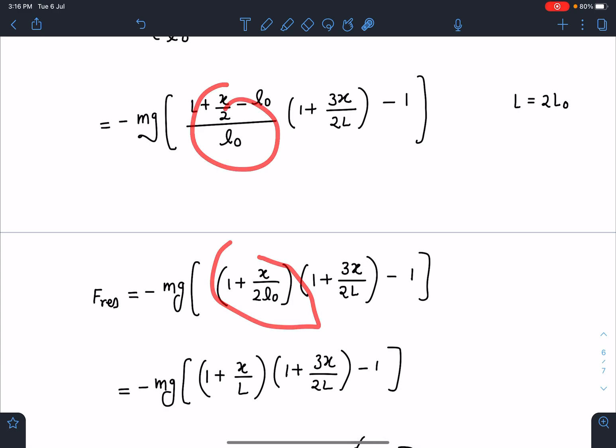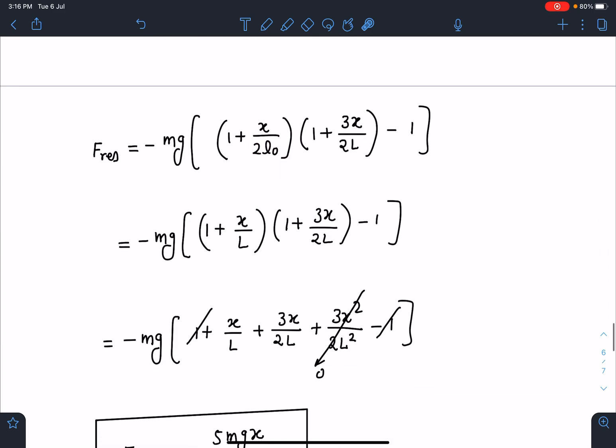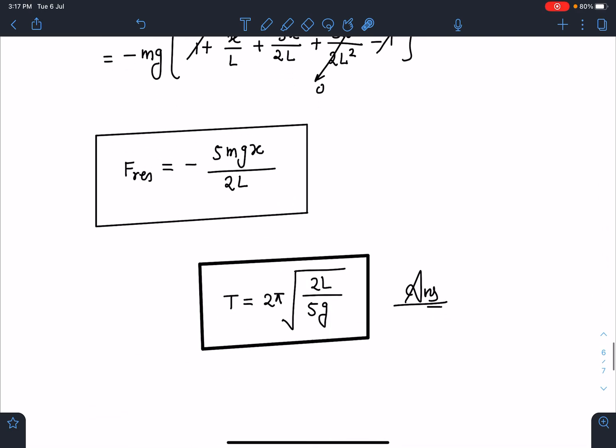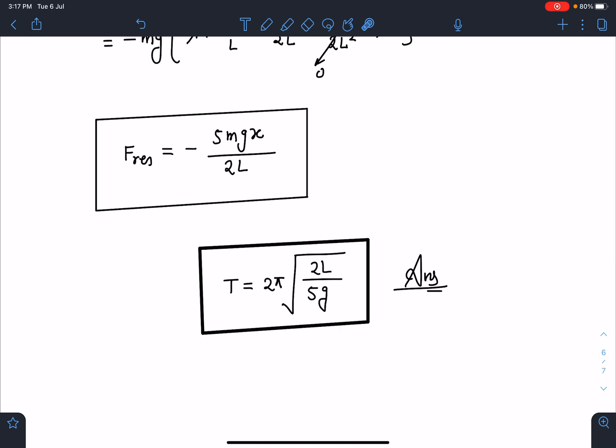If I further simplify this, I'm going to get (1 + x/2L₀) by rearranging this term, and (1 + 3x/2L) - 1. 2L₀ value I'm going to substitute as L because final answer we have to express in terms of L. So when I simplify, a lot of terms are getting cancelled and I'm getting -mg × 5x/2L. So F restoring becomes -5mgx/2L, or time period comes as 2π√(2L/5g). This is going to be the final answer for this problem.